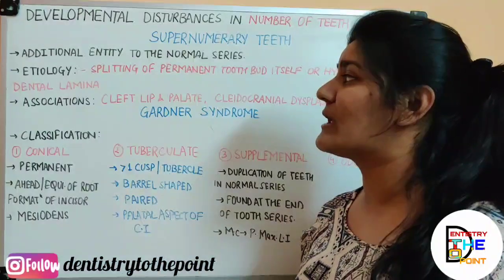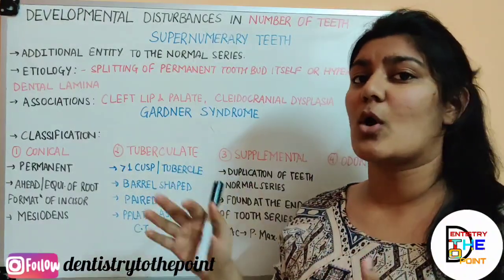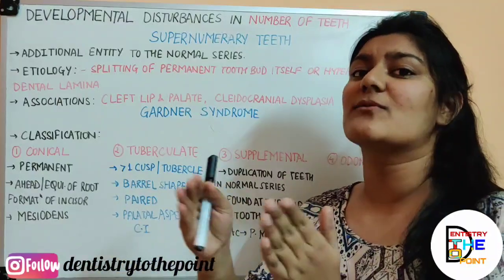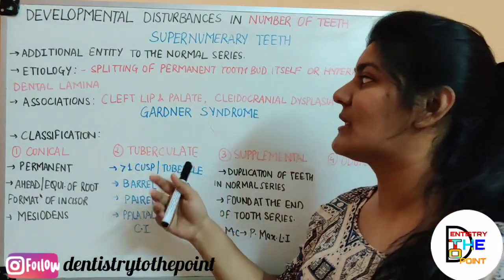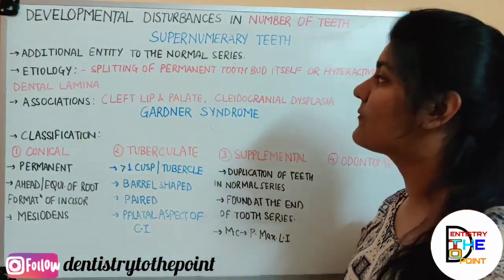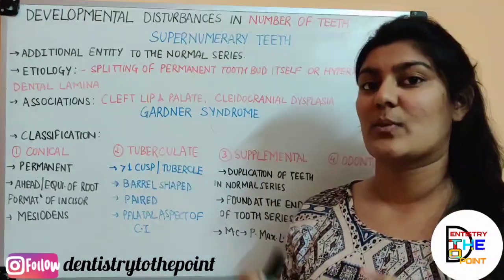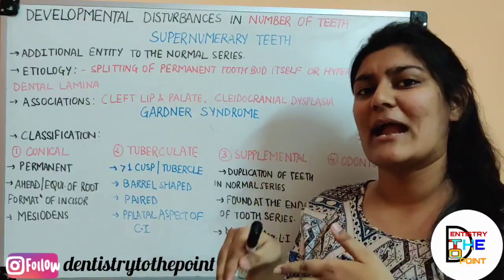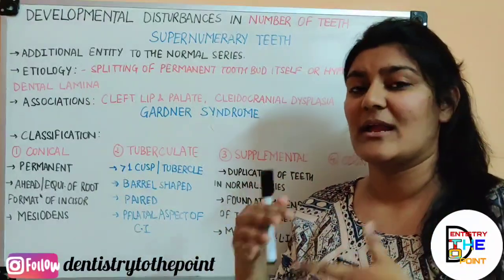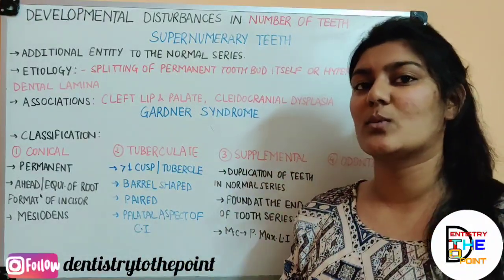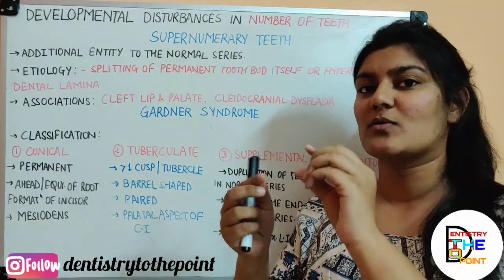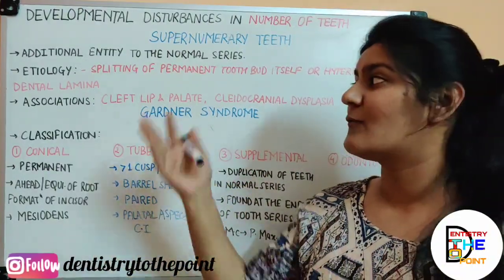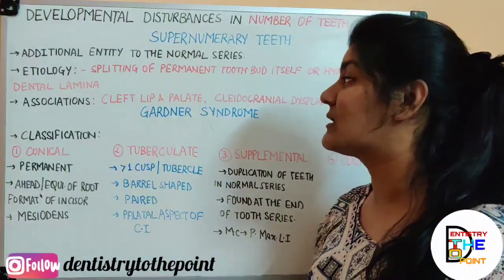Now the etiology — the cause — is not specific. Several theories were put forward. One theory is that there is splitting of the permanent tooth bud. So while the permanent tooth bud was going to give rise to a tooth, it got split into two parts — one became a normal tooth and the other grew as a supernumerary tooth.